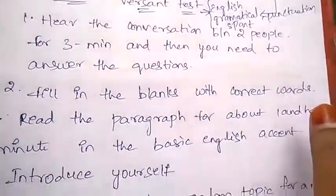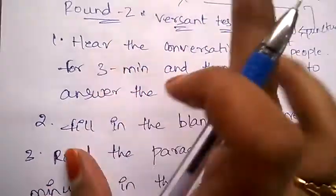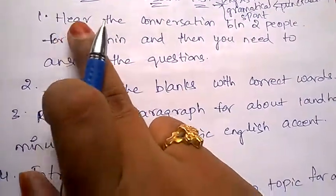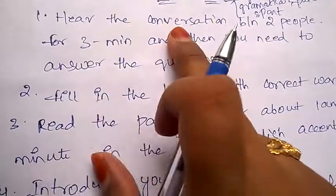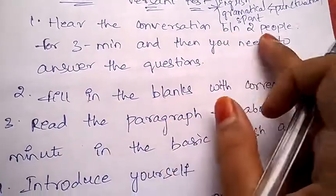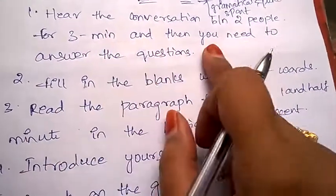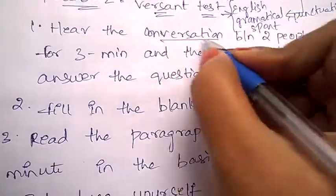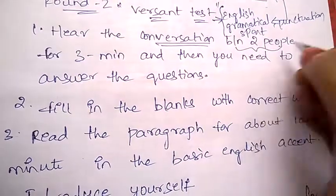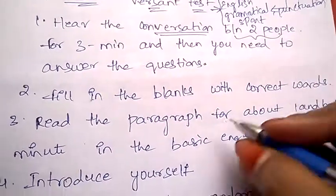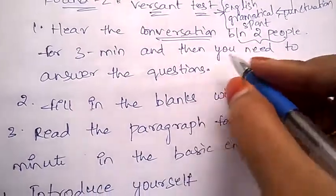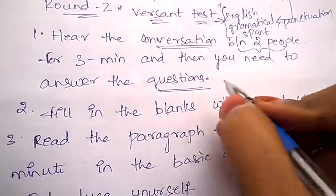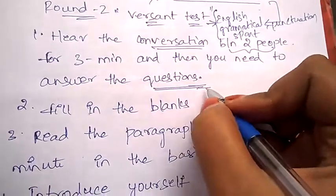2 of VERSE and test. So let's begin. First, under VERSE and test, you need to hear the conversation between two people for three minutes and then answer the questions. The conversation will be in English accent, so you need to try your level best to understand that accent and answer the questions. If you don't know the answer, just try telling something. Never sit idle. Next, the second section under VERSE and test is you need